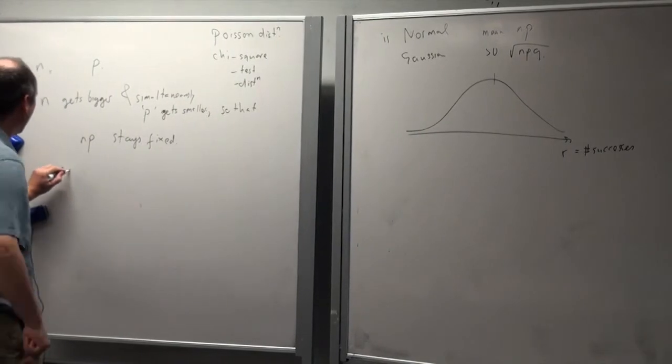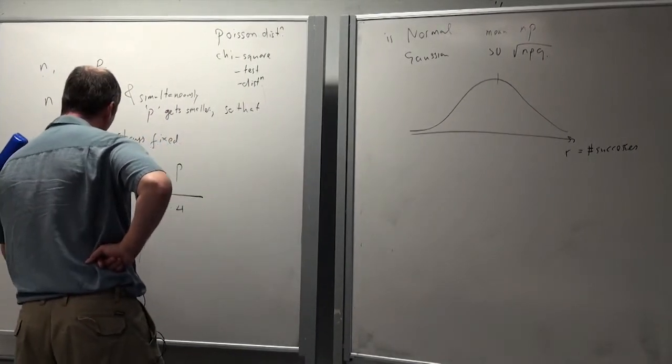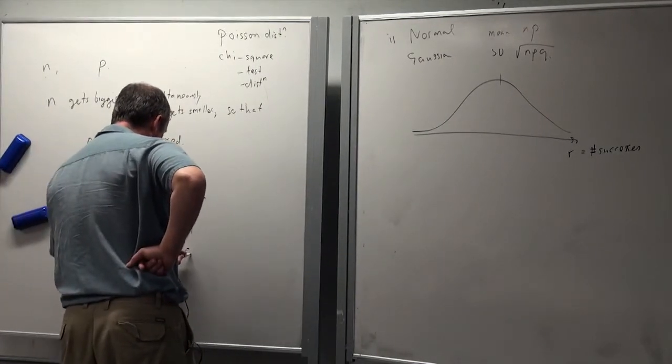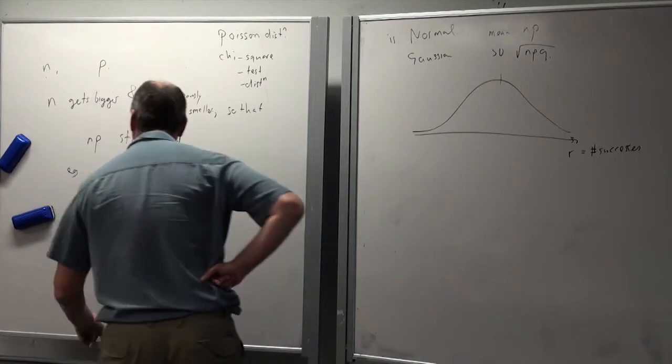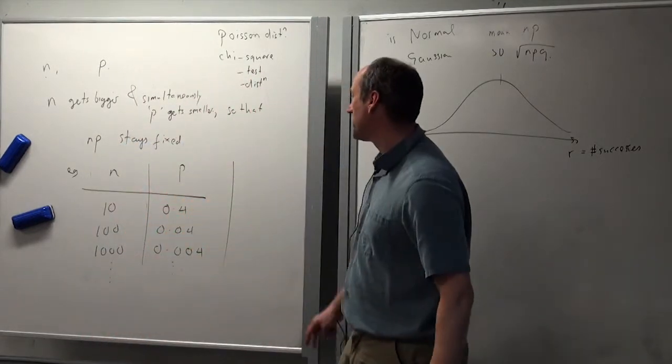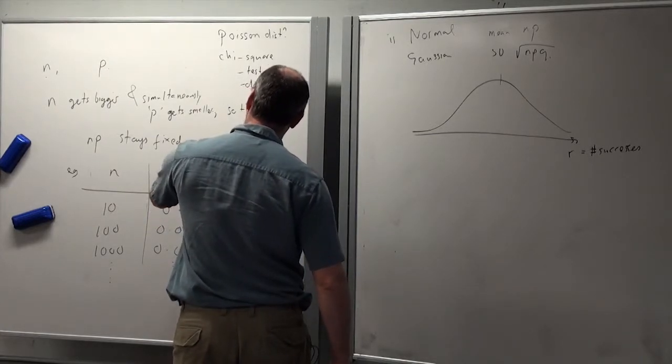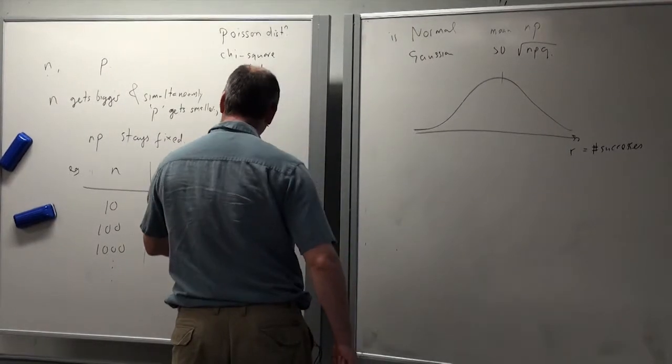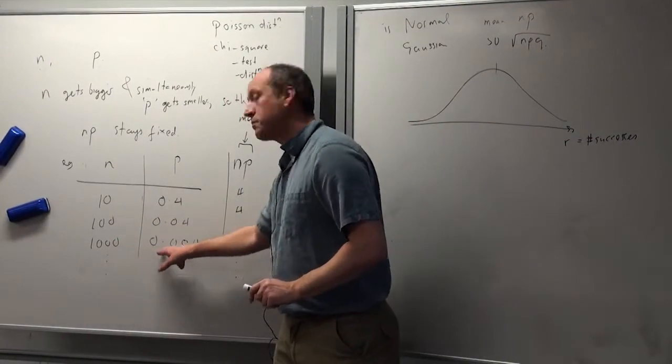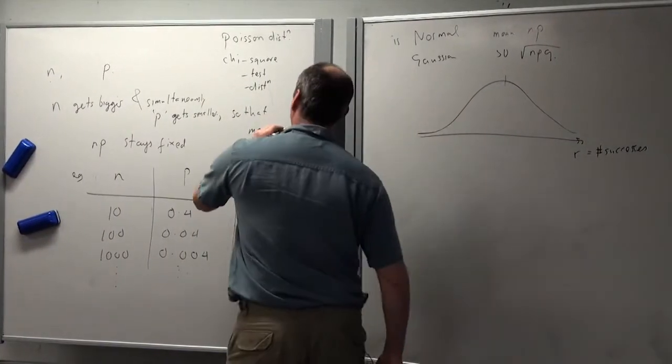So I'll give you an example. N and P, I'm just going to make a little table here: 10, 0.4; 100, 0.04; 1,000, 0.004; and so on. So we can see that as we go down this process here, N getting larger and larger and P getting smaller and smaller, NP which is of course the mean stays fixed. And of course I could have a million here so long as it's 0.000004, the mean will be fixed.